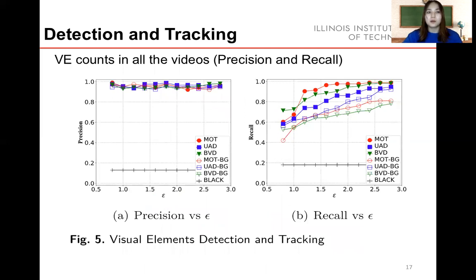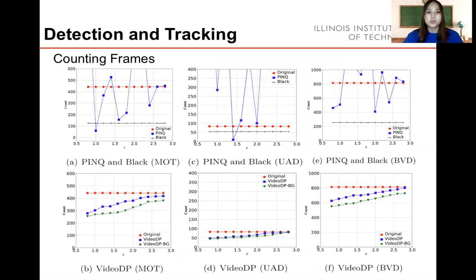For video analysis, it is important to have high detection and tracking accuracy. We show recall and precision for visual element counts in the entire video. We compare video DP results with results of directly making the visual element area black. Recall increases as epsilon increases since more pixels are sampled, meaning fewer visual elements are blurred. However, our precision is always high. Moreover, our method has better results overall. We also calculate counts of frames that include visual elements over certain counts, comparing with the PinQ platform and the blacking method. PinQ results are very fluctuated, and it is clear that video DP has better performance.